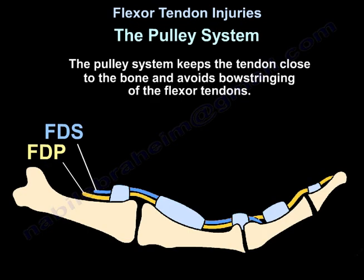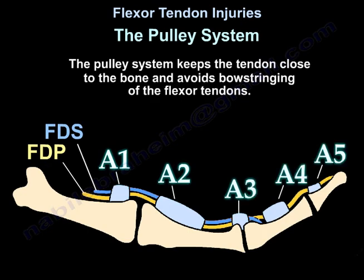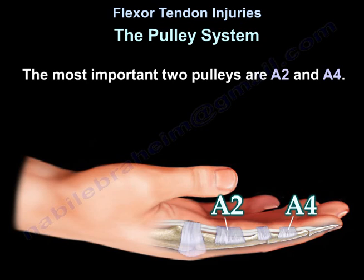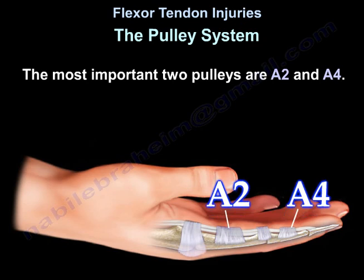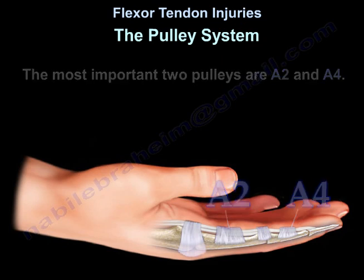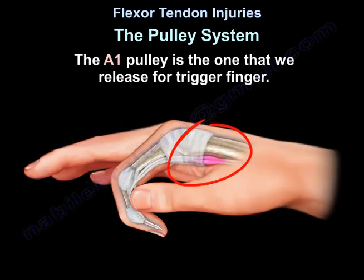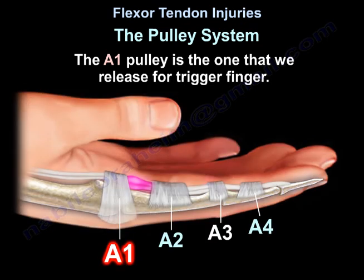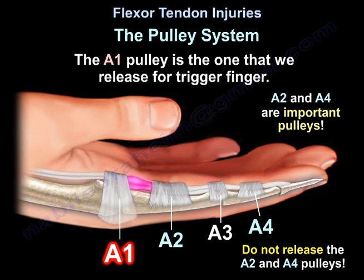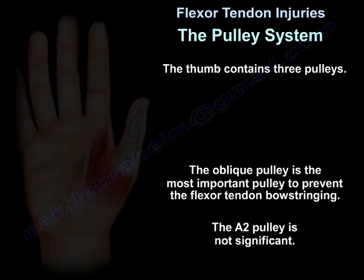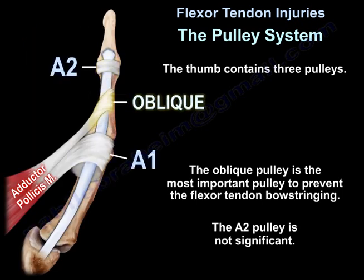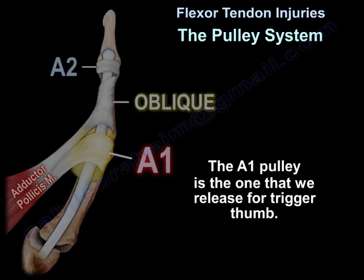The pulley system keeps the tendon close to the bone and avoids bowstringing of the flexor tendons. The most important pulleys are A2 and A4. The A1 pulley is the one released for trigger finger; do not release A2 or A4. The thumb has three pulleys: the oblique pulley is most important to prevent bowstringing, A2 is not significant, and A1 is released for trigger thumb.